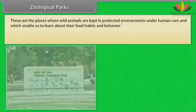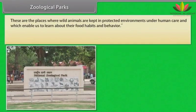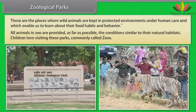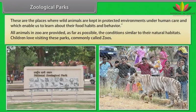Zoological Park: These are places where wild animals are kept in protected environments under human care, enabling us to learn about their food habits and behavior. All animals in a zoo are provided, as far as possible, conditions similar to their natural habitats. Children love visiting these parks, commonly called zoos.